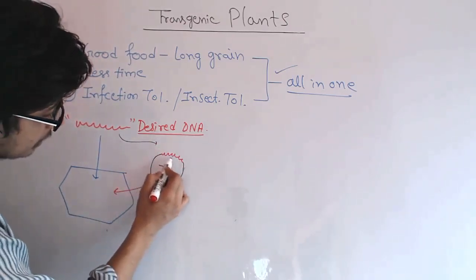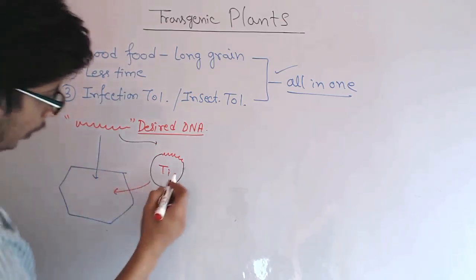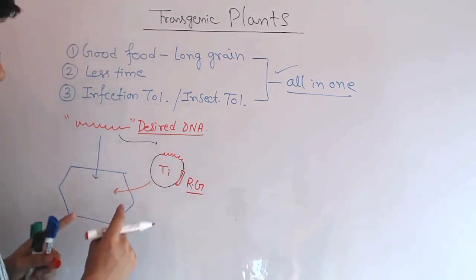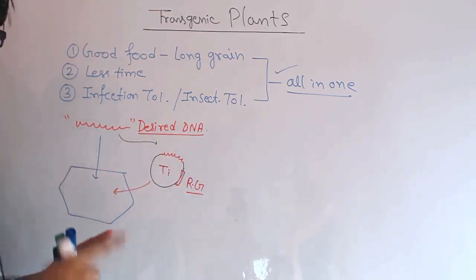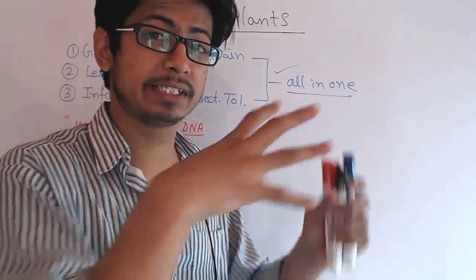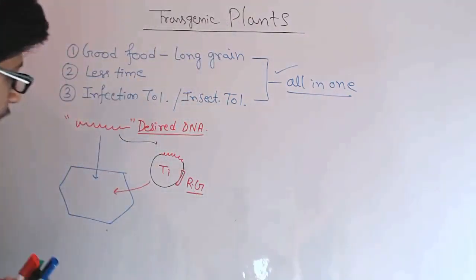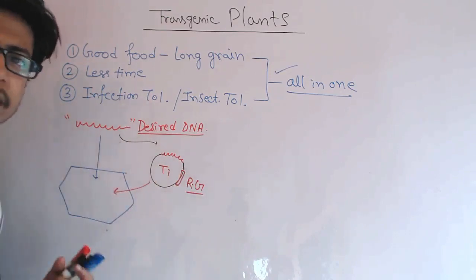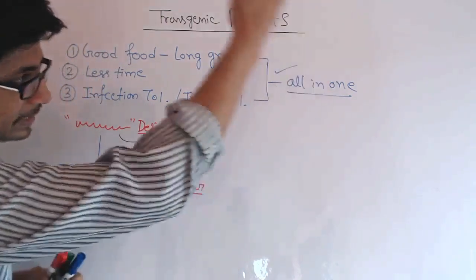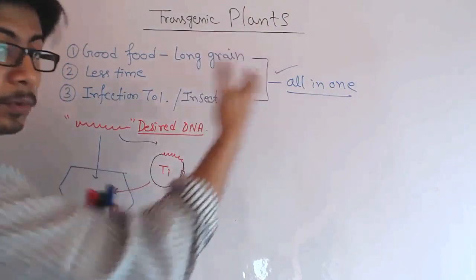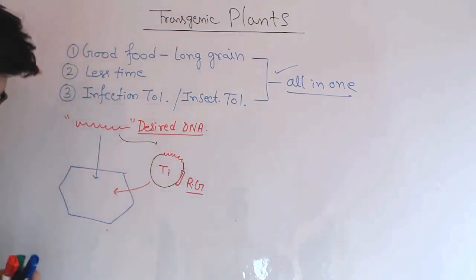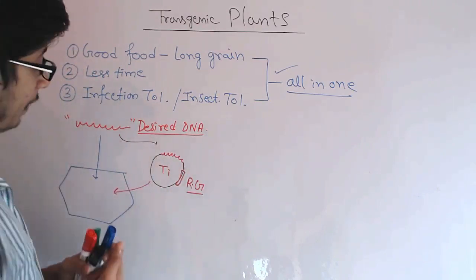We cleave a specific region of the Ti plasmid and attach our target DNA to it, creating a recombinant Ti vector. We then insert this complete recombinant Ti vector inside the plant. Along with the target DNA, we also include reporter genes, which tell us whether our DNA of interest was actually inserted into the plant cell or not — so we can monitor whether the insertion worked properly. We then allow the plant cell to grow and develop into a fully grown plant with better quality food, faster growth, and insecticide tolerance.